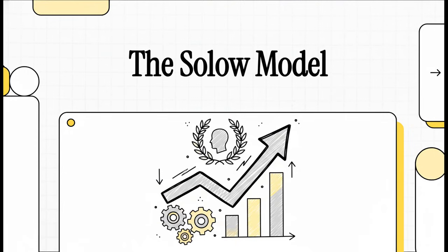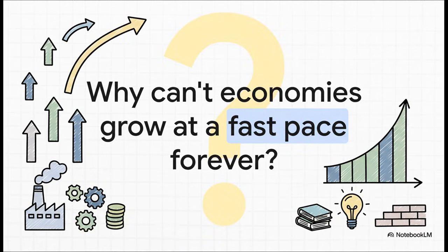Welcome to The Explainer. Today we're going to dig into a really big idea in economics, one that came from a Nobel Prize winner, and it helps explain the fundamental rhythm of how economies grow. Let's kick things off with a huge question, one that puzzles economists and world leaders all the time: why can't an economy just keep growing super fast forever?